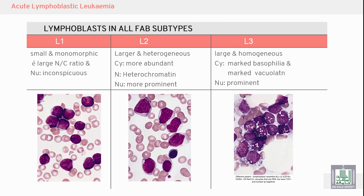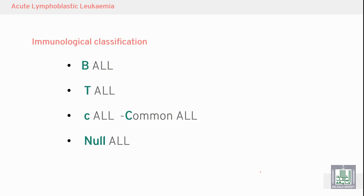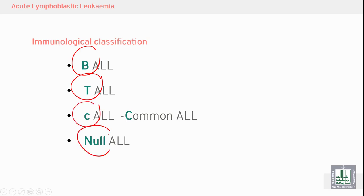This summary slide gathers all of the morphological differences between L1, L2, and L3. After morphological classification came immunological classification. The FAB system classifies ALL into B-ALL, T-ALL, common ALL, and non-T non-B ALL.